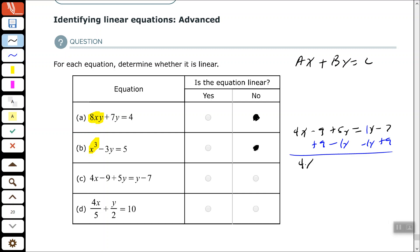So, we have 4x plus 4y equals 2. That checks out. That's in the form of Ax plus By equals 2. So, yes, that's linear.